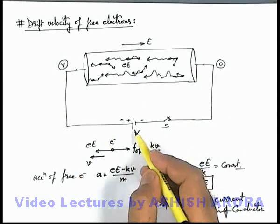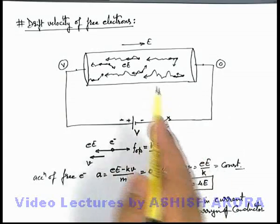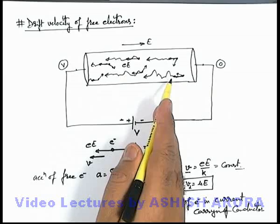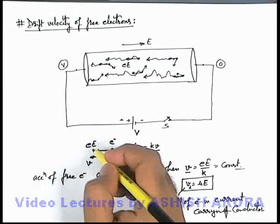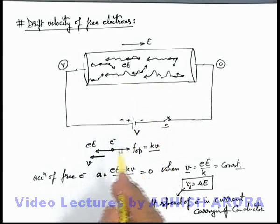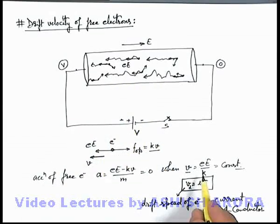That's why we can say on applying the battery potential difference when an electric field is set up, free electrons in the conductor will not continuously accelerate. These will accelerate for a short while and finally attain a drift speed.